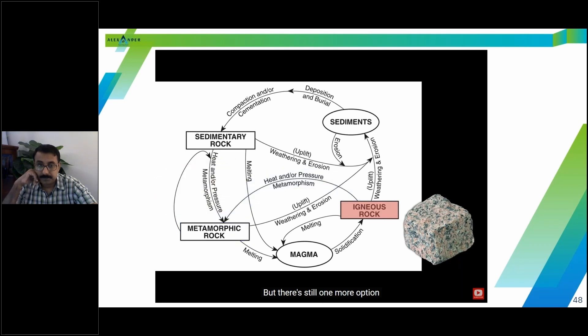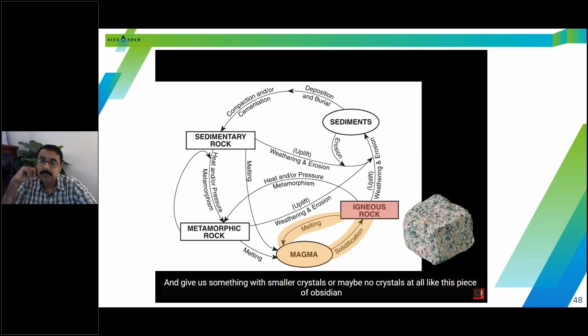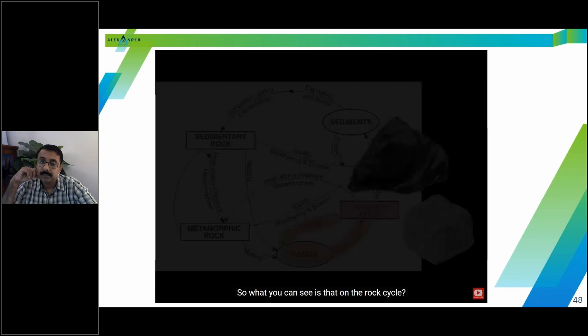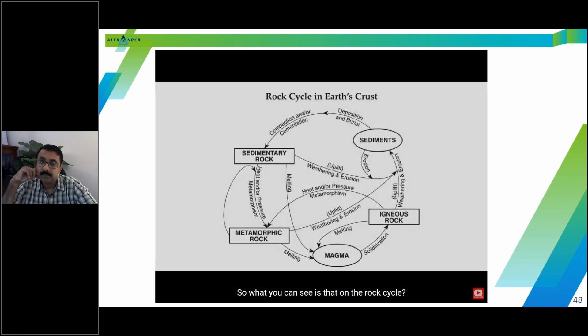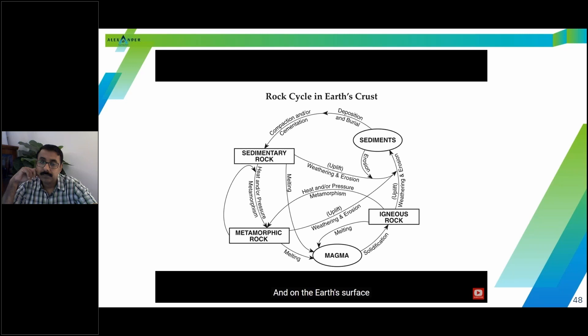But there's still one more option. What if our igneous rock is exposed to intense heat, causing it to melt and return into a liquid state of magma? Well, it can then cool and solidify again, giving us another igneous rock. But maybe this time it will cool quickly and give us something with smaller crystals or maybe no crystals at all, like this piece of obsidian. So what you can see is that on the rock cycle, any rock is able to turn into any other rock when exposed to the different processes in and on the Earth's surface.